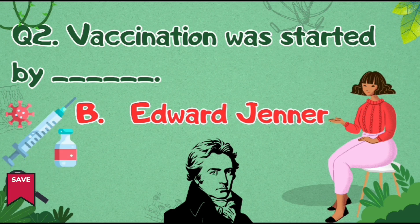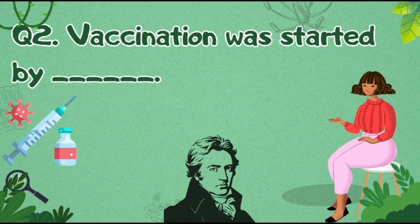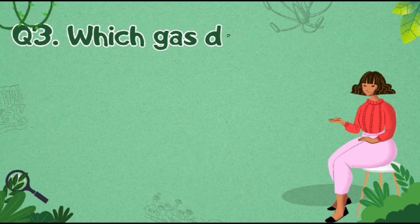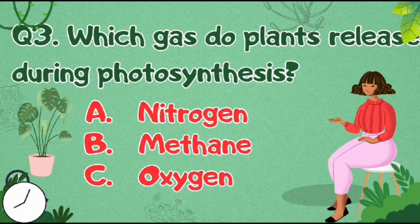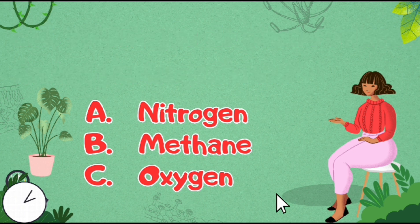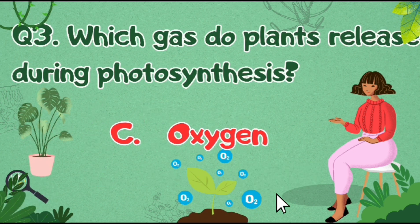Vaccination was started by Edward Jenner. Which gas do plants release during photosynthesis? The right answer is option C, oxygen.